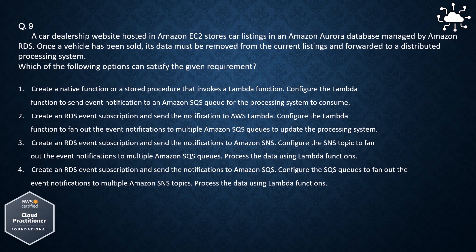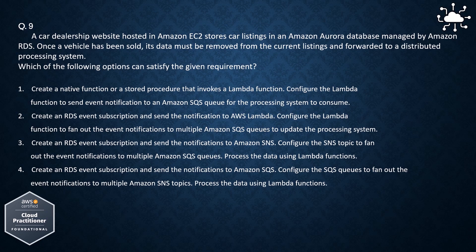Option 1: Create a native function or a stored procedure that invokes a Lambda function. Configure the Lambda function to send event notifications to an Amazon SQS queue for the processing system to consume. Option 2: Create an RDS event subscription and send the notification to AWS Lambda, then configure the Lambda function to fan out event notifications to multiple SQS queues. Option 3: Create an RDS event subscription and send notifications to Amazon SNS, configure the SNS topic to fan out to multiple SQS queues, and process the data using Lambda functions. Option 4: Create an RDS event subscription and send notifications to Amazon SQS, configure the SQS queues to fan out to multiple SNS topics, and process using Lambda functions.